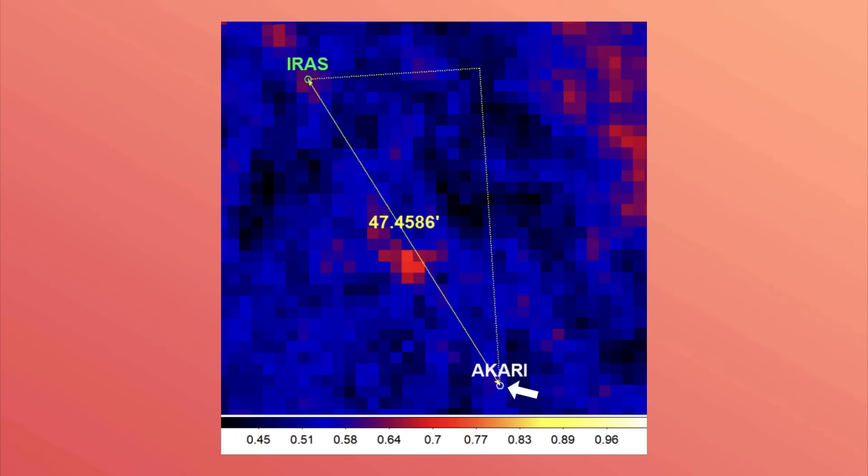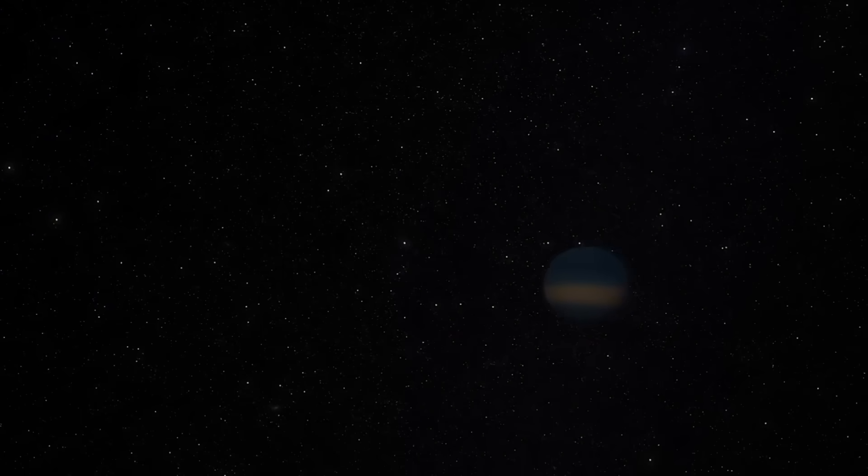And eventually, they found one. A faint dot in the IRA's data from 1983. And another dot, 47 arc minutes away, in the Akari data from 2006. Could it be the same object? Could it be Planet 9? Possibly. Because based on its brightness in the infrared data, it would have to be more massive than Neptune.